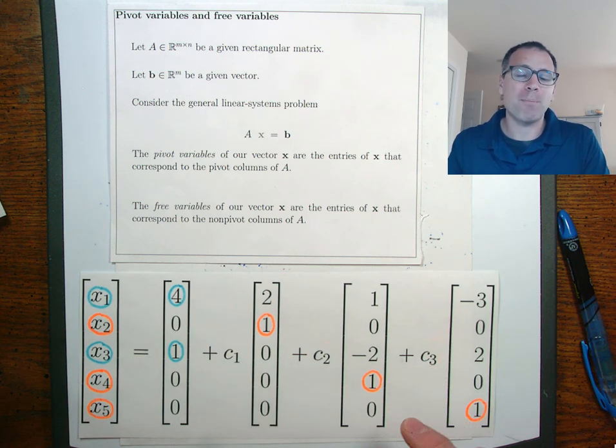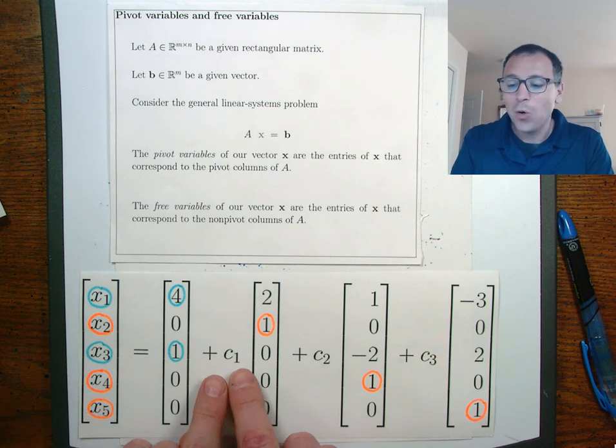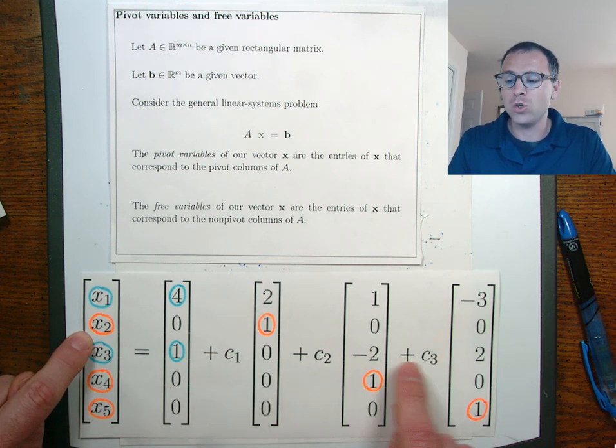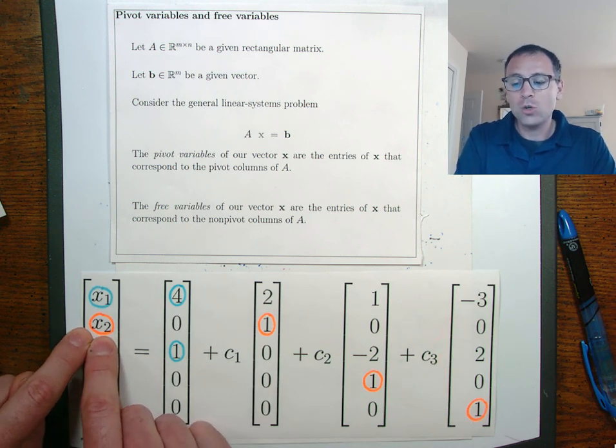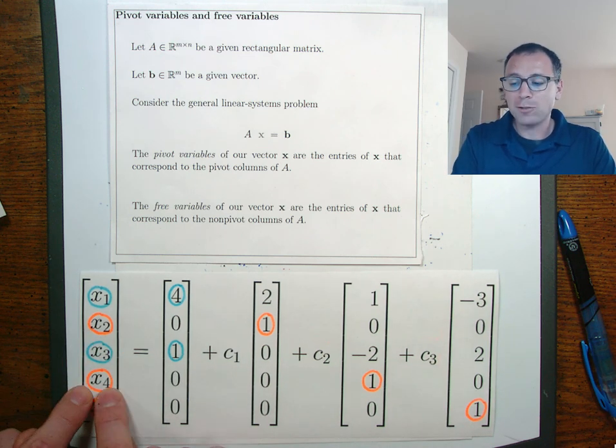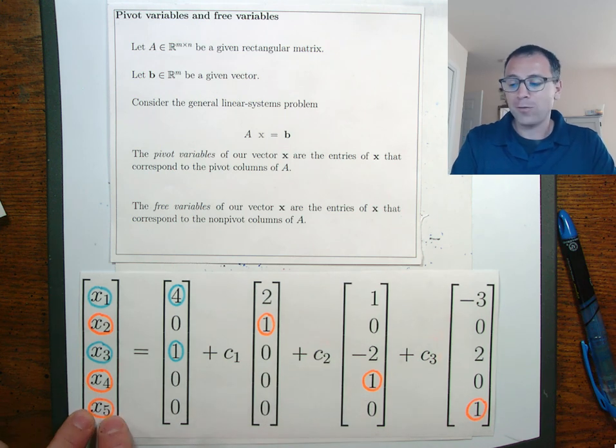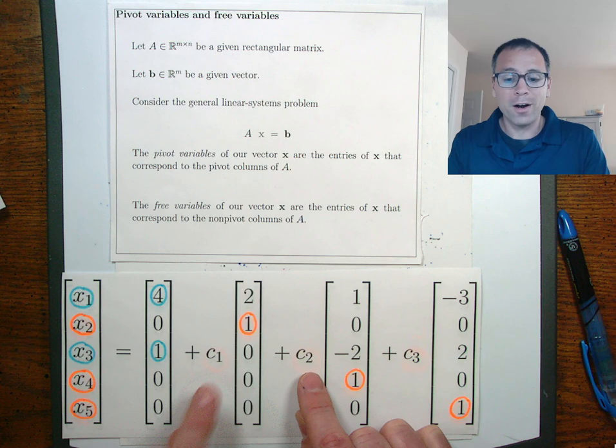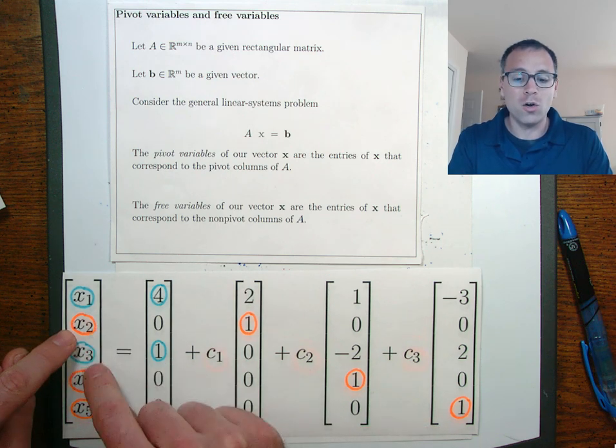Now this gets into kind of a personal pet peeve of mine. I don't like the fact that we're introducing new constants c1, c2, c3. In fact, in these equations x2 is equal to c1, x4 is equal to c2, x5 is equal to c3. To me that's stupid. Why are we introducing these new variables? The point of this is these are unknown variables.